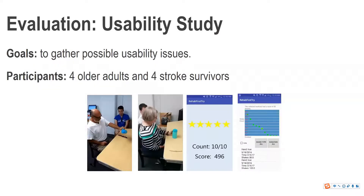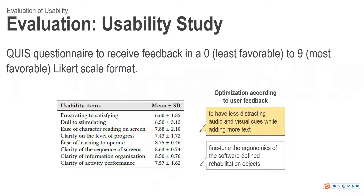In the usability study, the goal is to gather possible usability issues. We enrolled four older healthy adults and four stroke survivors. Each participant was asked to perform all specified activities. Afterward, a questionnaire was delivered to each participant to receive feedback, using a 0 (least favorable) to 9 (most favorable) Likert scale format. We then made optimizations according to user feedback — for example, providing less distracting audio and visual cues while adding more text, and fine-tuning the ergonomics of the software-defined rehabilitation objects.